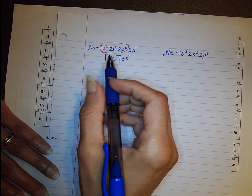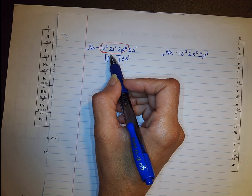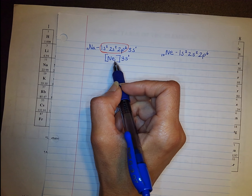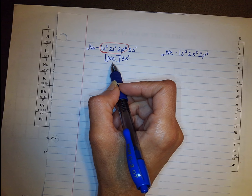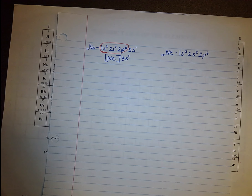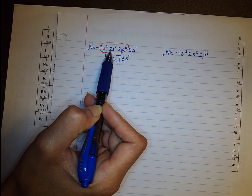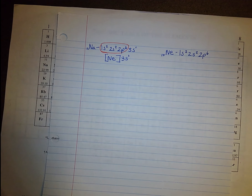You only replace the configuration in any of the elements with just the noble gas — that's why it's called noble gas notation, because you're using the noble gas elements to replace part of the electron configuration of other elements.